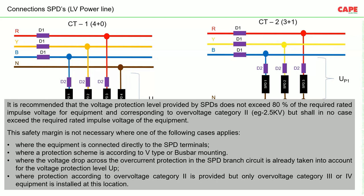This safety margin is not required where the equipment is directly connected to the SPD terminals — reducing wire length significantly and minimizing voltage drop — or where a protection scheme using V-type or bus-bar mounting is applied. Bus-bar mounted SPDs are available in the market; due to their shorter connecting lead lengths, voltage drop is very low and optimum protection can be achieved.